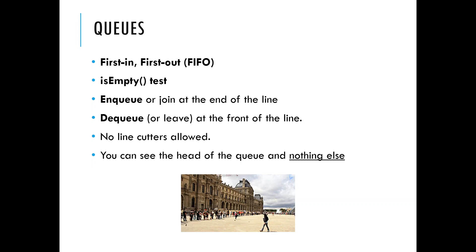Every queue needs a few operations: check if it's empty; enqueue — spelled E-N-Q-U-E-U-E — to join the back of the line; and dequeue — not Dairy Queen — to leave from the front, returning the element that left. There are no cutters: you can't go to the middle of the line, you can't see who's in the middle. All you can see is the front and the back.